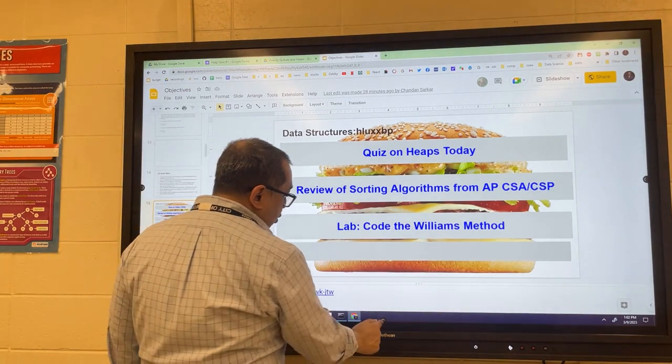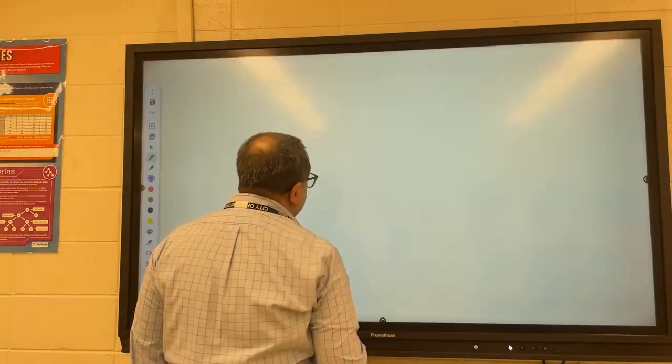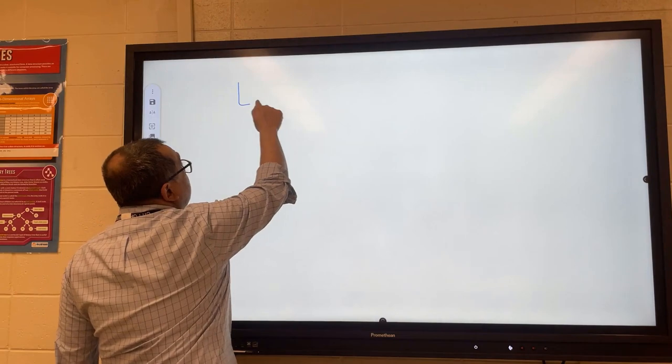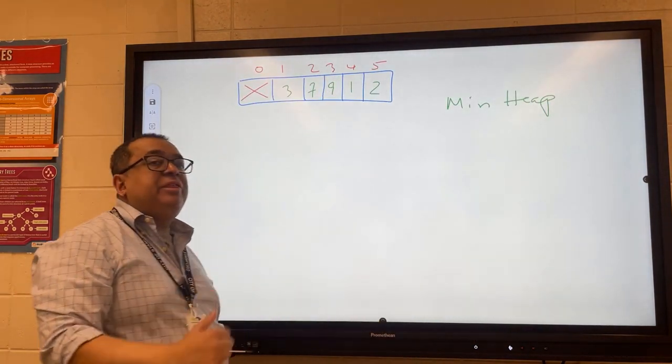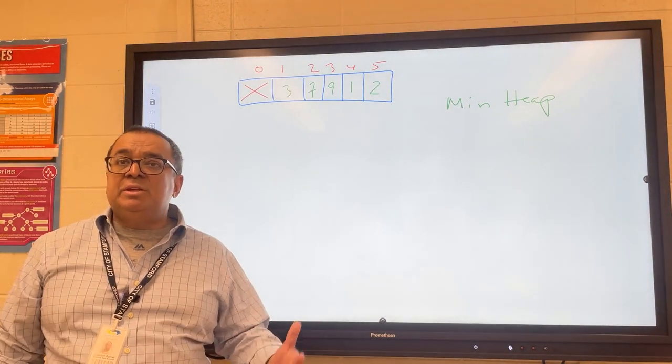Let's look over here and I'll arbitrarily create an array with some numbers in it. It doesn't have to be a big one. In the Williams method, we do successive insertion.